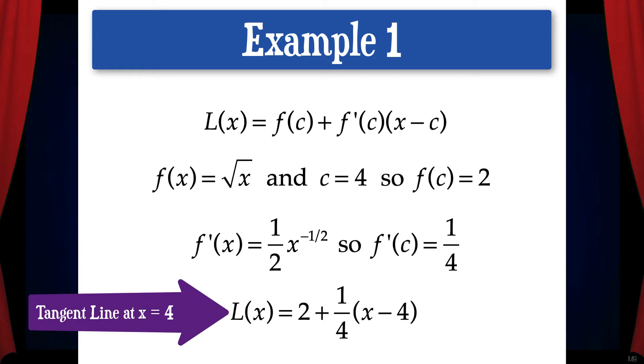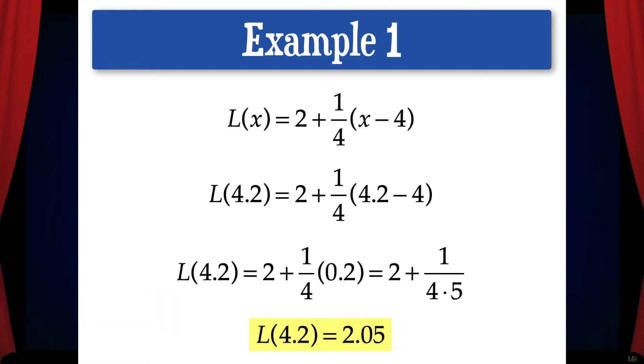Remember, this is just the equation of the tangent line at x equals 4. The problem wants us to use this tangent line to approximate the value of the square root of 4.2. So what we need to do is find L of 4.2. When we do the arithmetic, we get 2.05.